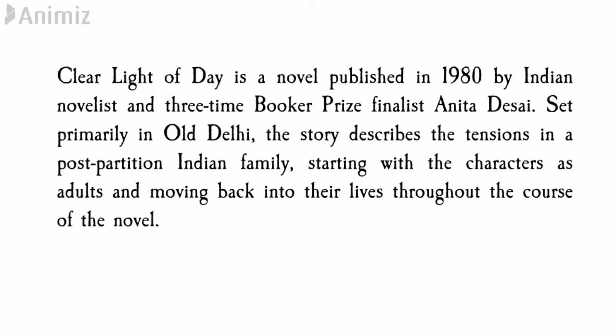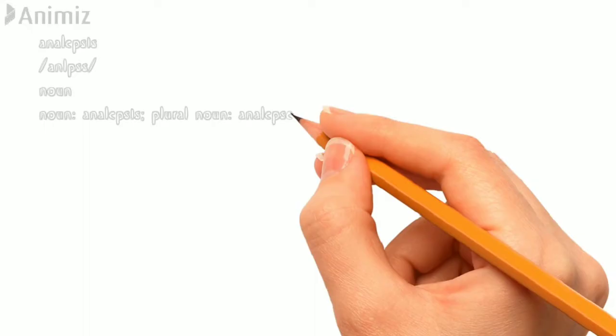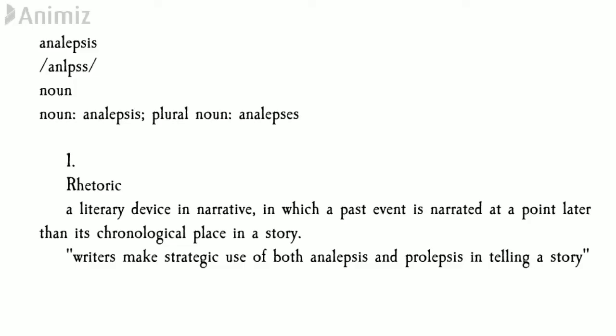Clear Light of Day is a novel published in 1980 by Indian novelist and three-time Booker Prize finalist Anita Desai. That accomplishment alone tells us she is a very exemplary novelist and author. This entire novel is primarily set in Old Delhi and describes the tensions in post-partition Indian families, starting with the characters as adults and moving back into their lives. A very interesting literary device used here is analepsis.